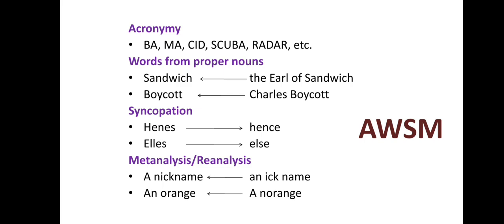Syncopation is a process in which a vowel is elided and two consonants are brought together. For example, 'henness' became 'hens' and 'ellers' became 'else.' The vowel is dropped and the two consonants are brought together, forming a shortened word.